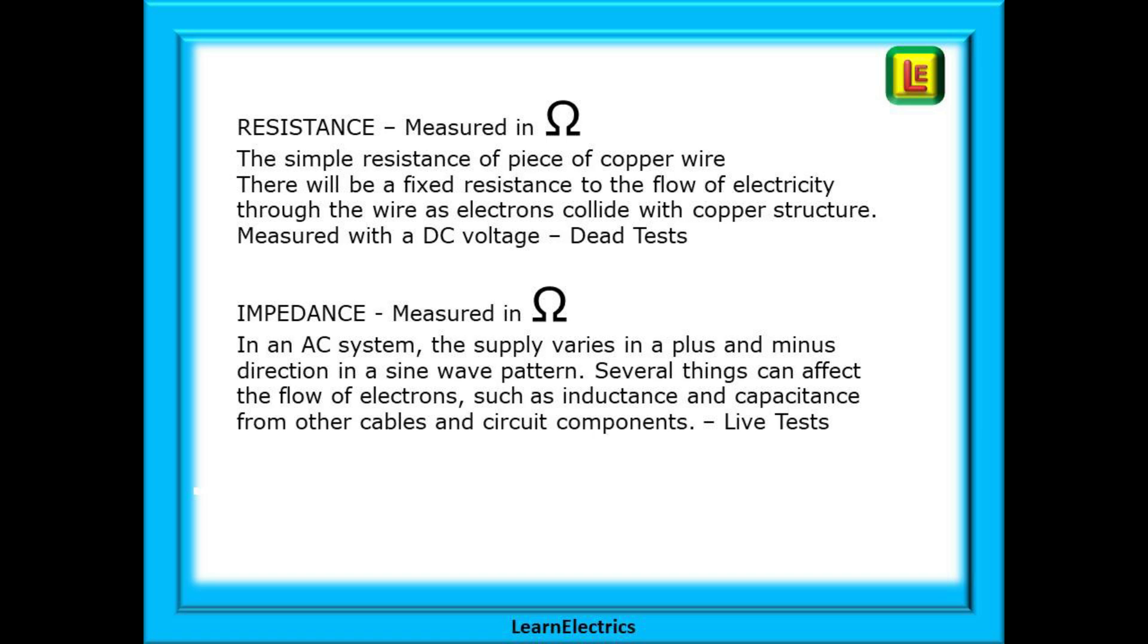The second one is impedance and this is again measured in ohms with a slight difference. In an AC alternating current system the supply varies in a plus and minus direction in a sine wave pattern. Several other things could now affect the flow of electrons such as inductance and capacitance from other cables and circuit components and these are live tests with the circuit energized. Impedance values will vary depending on what else is happening in the installation.